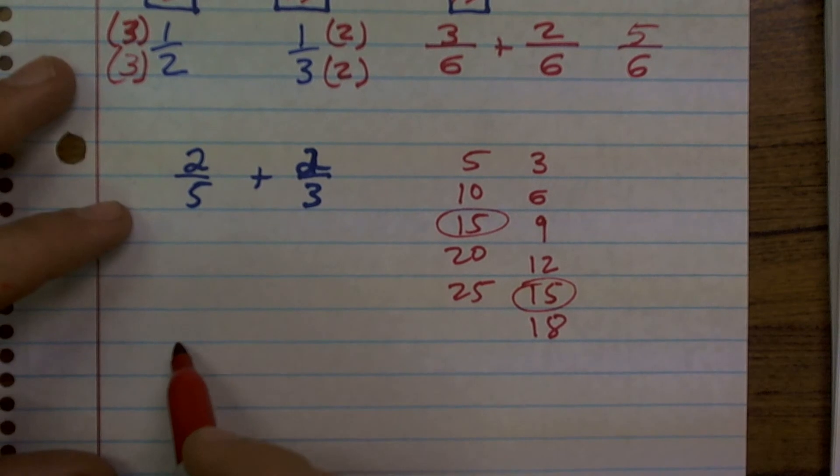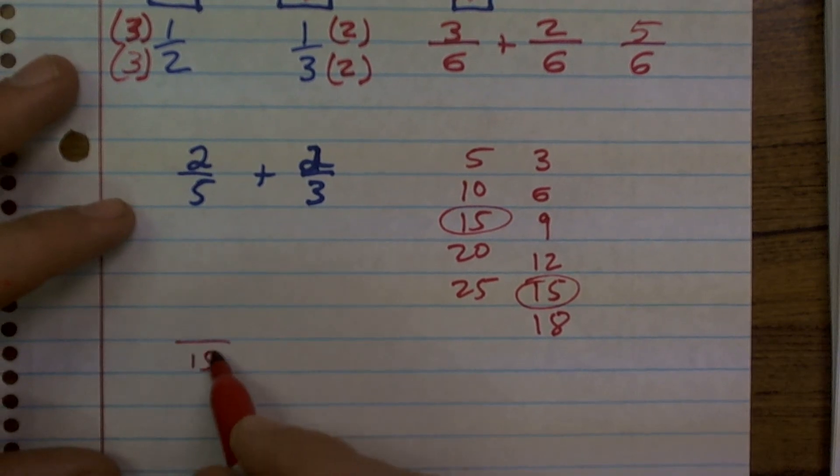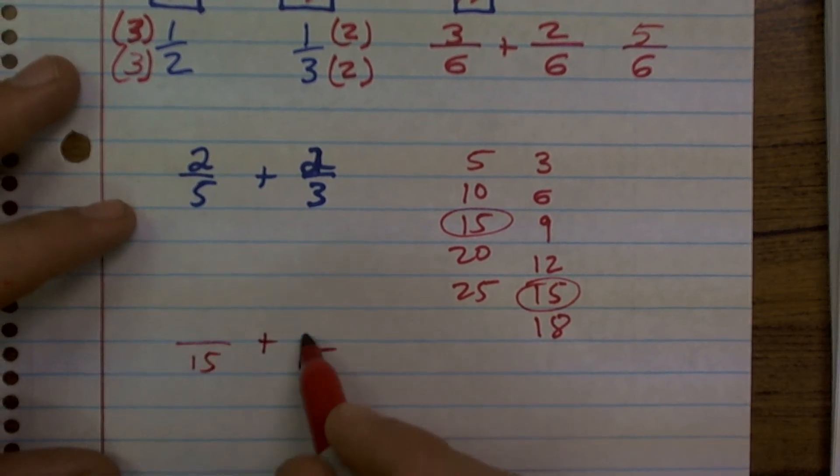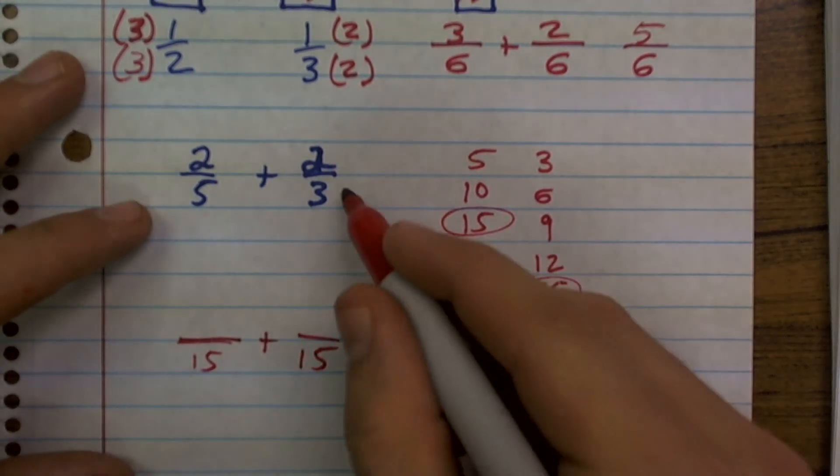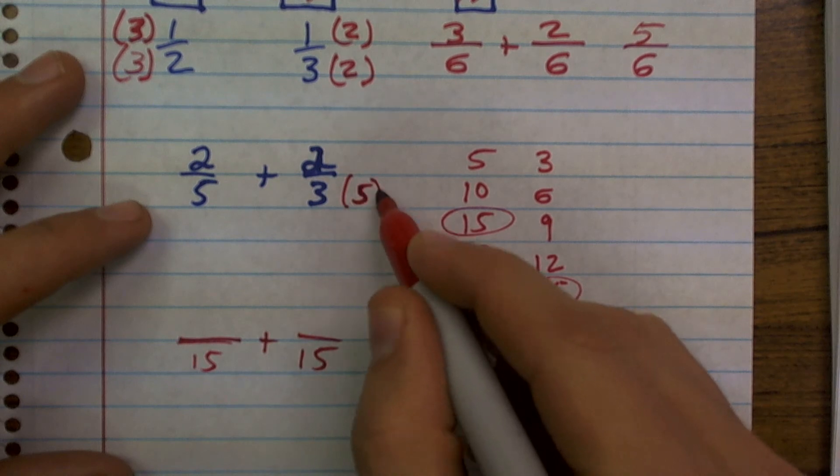So what that means is my answer, I'm going to want to get 15 plus 15. So now what I've got to do is determine how am I going to get 3 and 5 to be 15. Well, to get 3 to be 15, I need to multiply by 5.